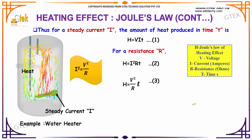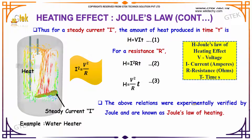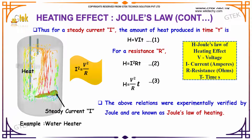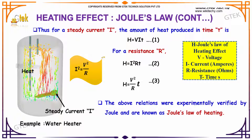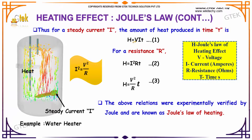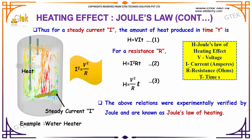Further, for a steady current I, the amount of heat produced is H = V × I × T. So H is nothing but Joule's law of heating, where V is voltage, I is current, R is resistance, and T is time.